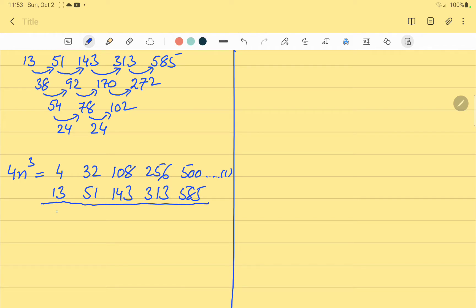13 minus 4 is 9. 51 minus 32 is 19. 143 minus 108 is 35. 313 minus 256 is 57.